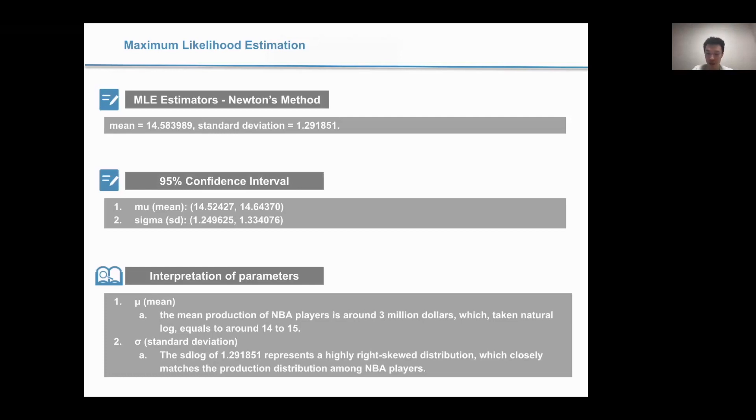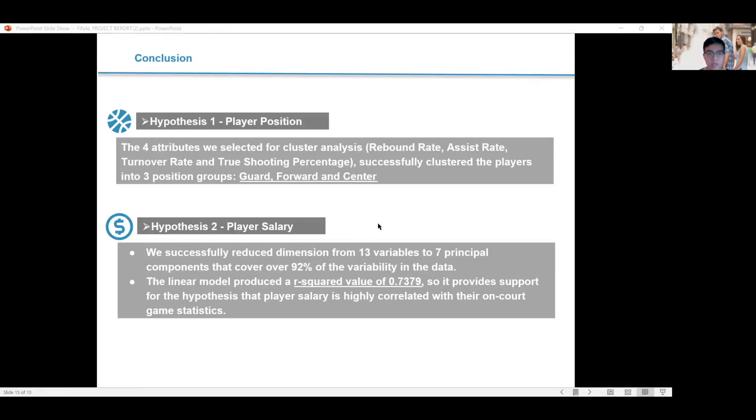So, in all, thanks to my teammates, we have discovered that for hypothesis 1, the four attributes we actually selected for the cluster analysis are successfully clustering the players into three positions, and we double-checked it with the labeling variables that we set aside, and later on verified that these positions are actually accurate. And also, for the player salary, we successfully reduced the dimensions from 13 variables to 7 principal components that covers over 92% of the variability inside the data. And the linear model produced a decent R-square. So, I would say that it provides support for the hypothesis that the player salary is highly correlated with their on-court game statistics. So, overall, I would say that our analysis is a success, and we successfully used all these components of this statistical analysis, and we further our understanding on it. So, thank you very much.